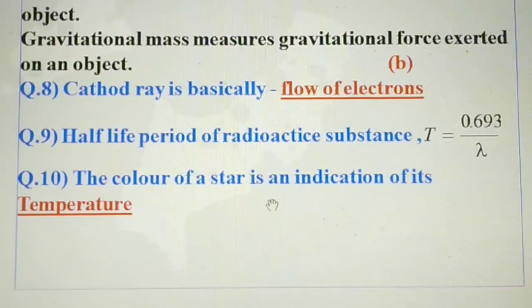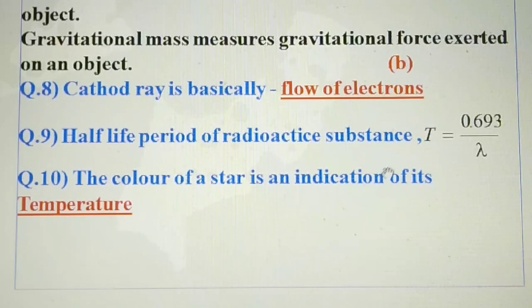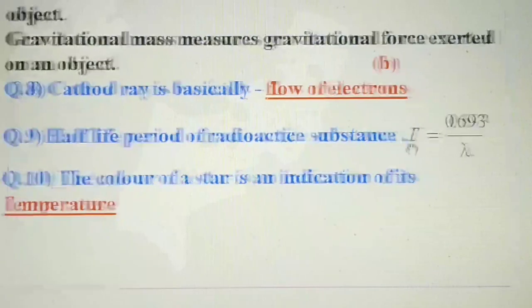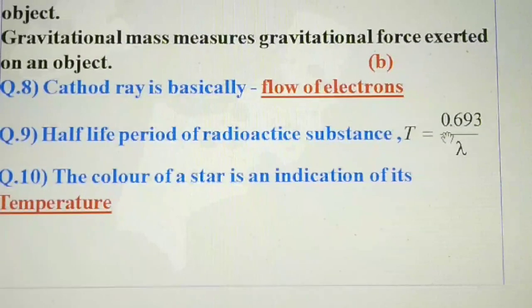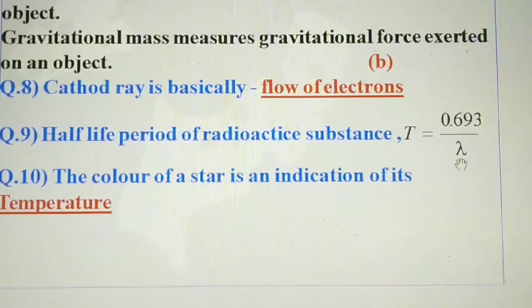Koi bhi radiative substance — half hone mein kitna time lagta hai? Us time ko half-life kehte hain. Iska formula kya hai? t equal to 0.693 divided by lambda. Lambda ka matlab decay constant, aur decay constant ka matlab reciprocal of time.